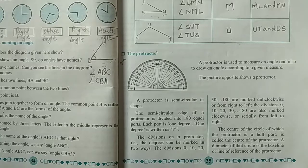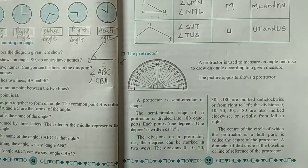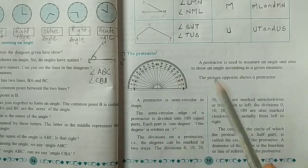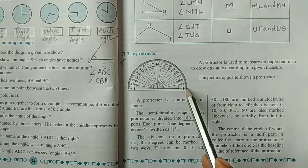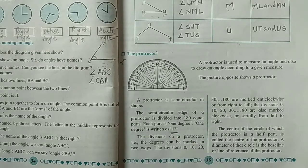A protractor is semicircular in shape. The semicircular edge of a protractor is divided into 180 equal parts. Each part is one degree. One degree is written as 1°.